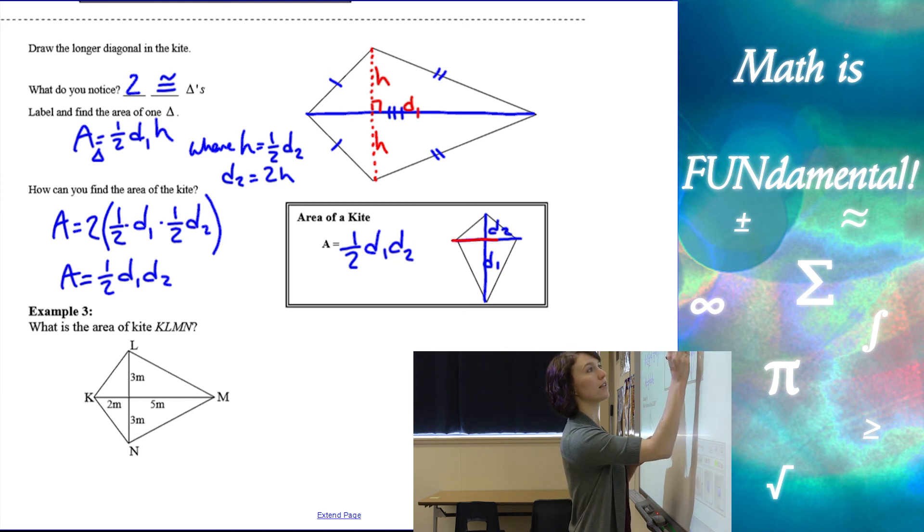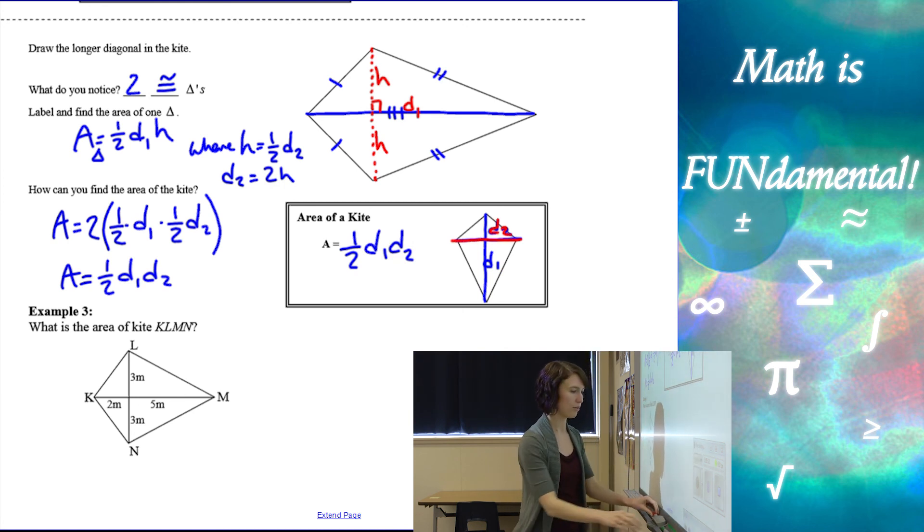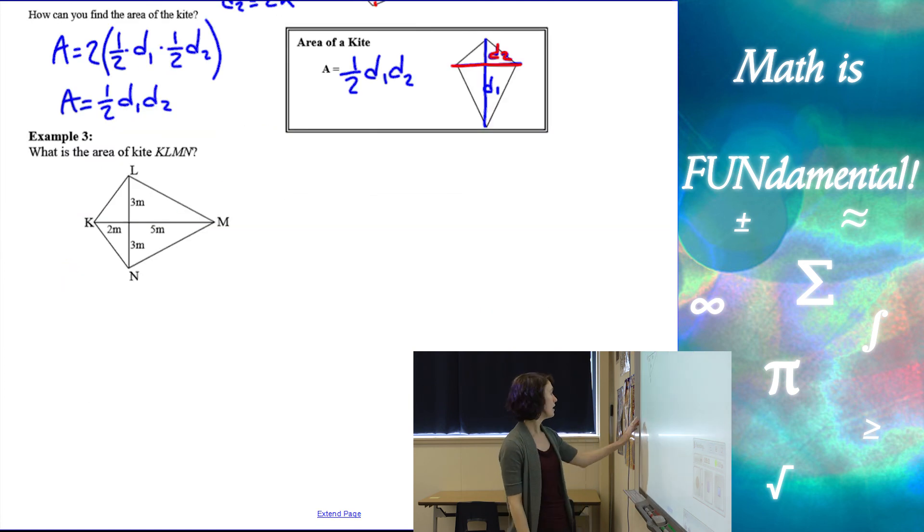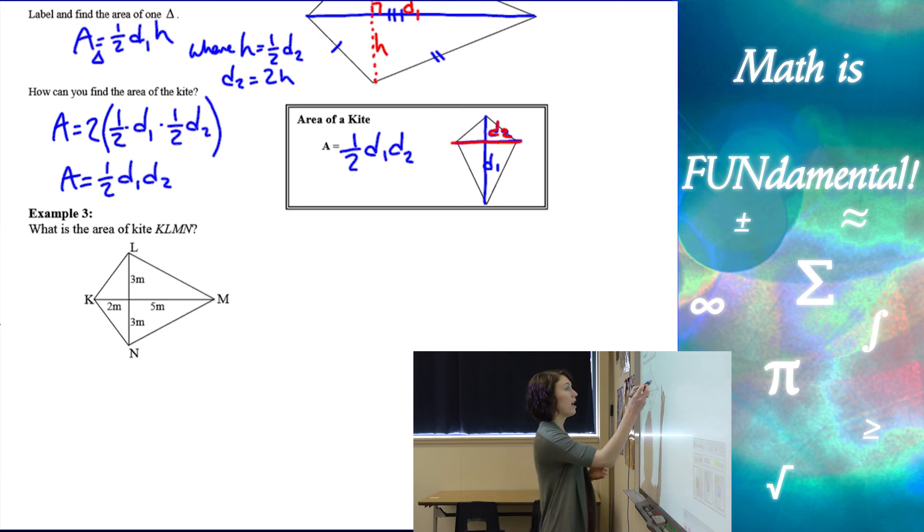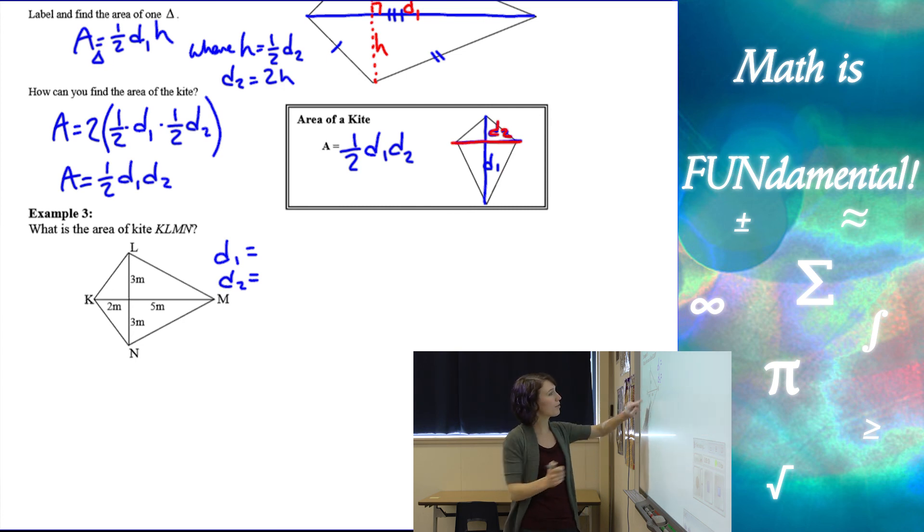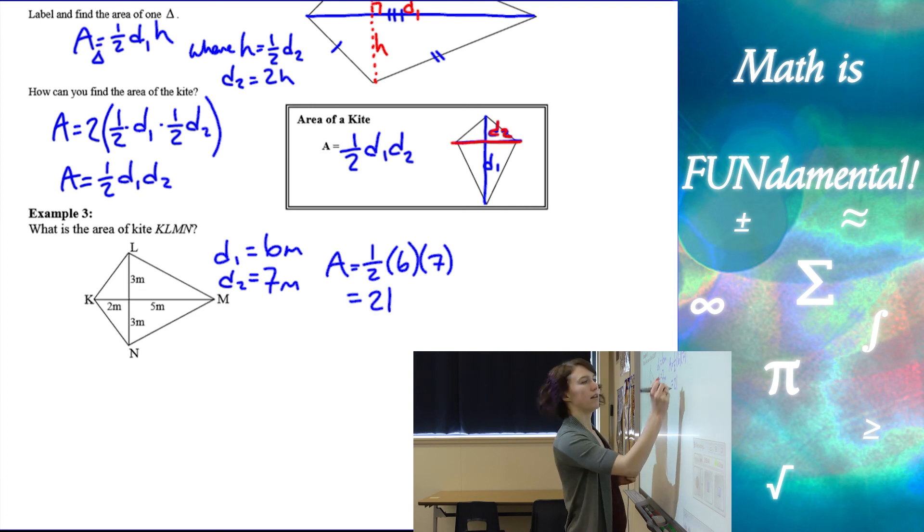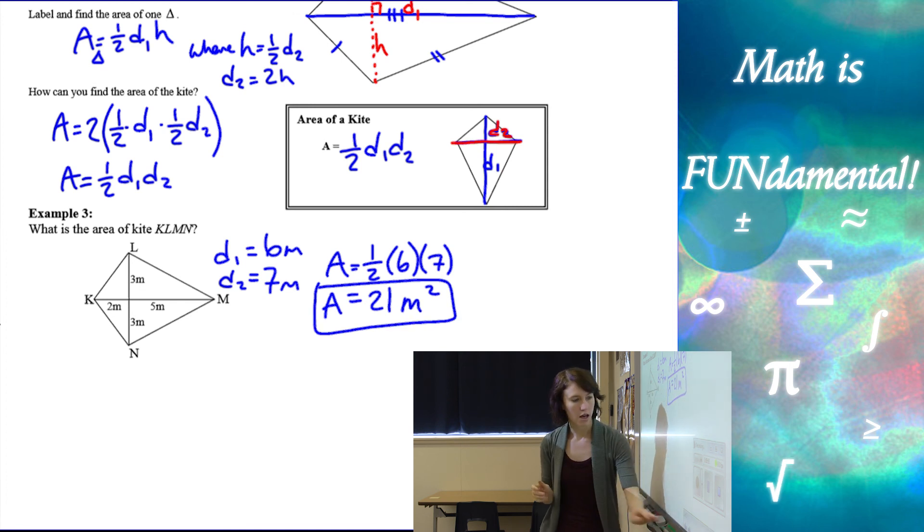You know what, let's color code these. So D1 is blue, D2 is red. There we go. All right, so let's just do one quick example. If I'm given this kite and I need to find the area, I'm going to find the length of my diagonal. So sometimes they're split up, you got to add things together. So three plus three, that's going to be six meters. And my other diagonal is going to be seven meters. So my area is going to be one half, six times seven, which is 21. And our units are meters squared.